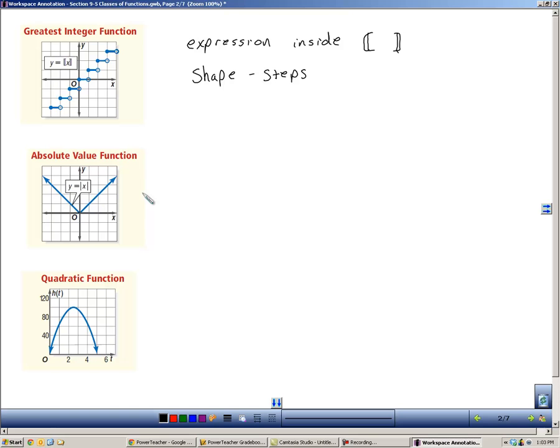The next one is the absolute value function. And that's created when you have a direct variation that's inside the absolute value bars. If you have that, the shape of that function is going to be a v-shape. And then you can adjust that v-shape going up and down by adding and subtracting numbers to it.